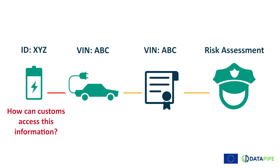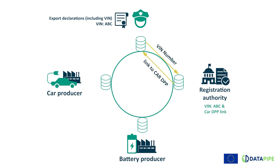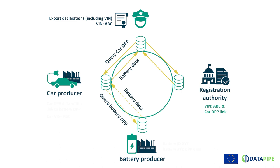How can Customs access this information? Let's assume that there is a data sharing system through which Customs can request the data it needs. As a first step, Customs uses the vehicle's VIN number to obtain access to the car DPP through the car registration authority. Thanks to the link to the battery DPP contained in the car DPP, Customs can obtain battery data, including the state of health data. Customs then proceeds to risk analysis and decides whether or not to ban the car from export.